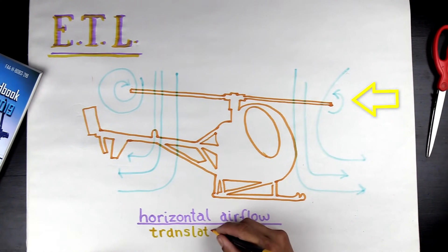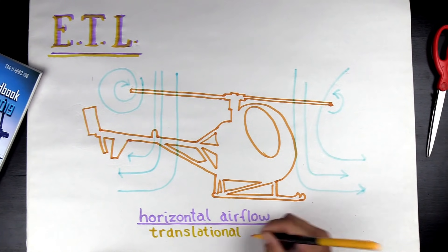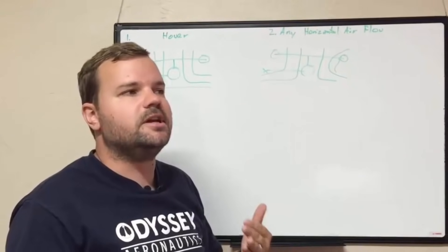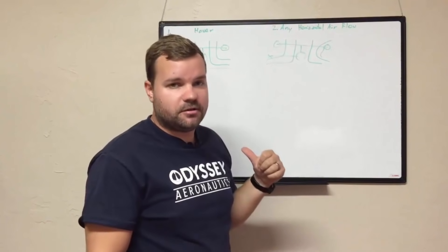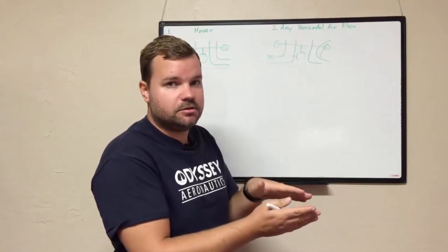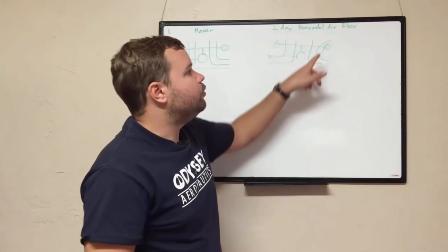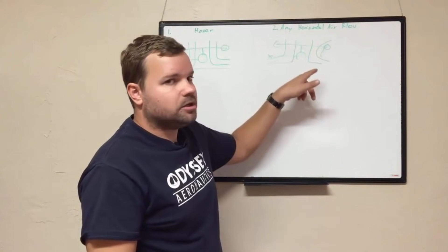When you change your airflow from coming straight down to a little more horizontal, you have reduced your induced flow. You can watch one of my other videos where I explain why reducing induced flow increases angle of attack. But when you reduce induced flow you get more lift.